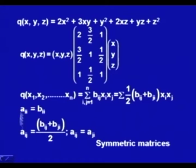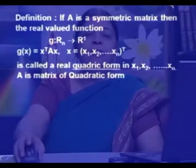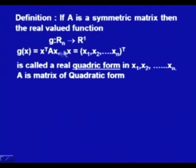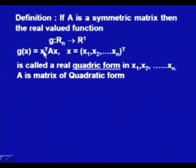With this definition, I can always represent a given quadratic in matrix form where the matrix is a symmetric matrix. I formally define the quadratic form: if A is a symmetric matrix, then the real-valued function g: Rⁿ → R¹ defined as g(x) = xᵀAx, where x = [x₁, x₂, ..., xₙ]ᵀ, is called a real quadratic form in variables x₁, x₂, ..., xₙ. The matrix A is the matrix of the quadratic form.